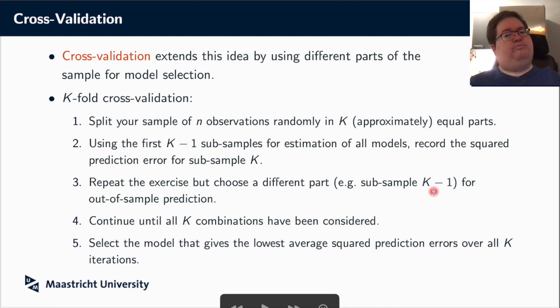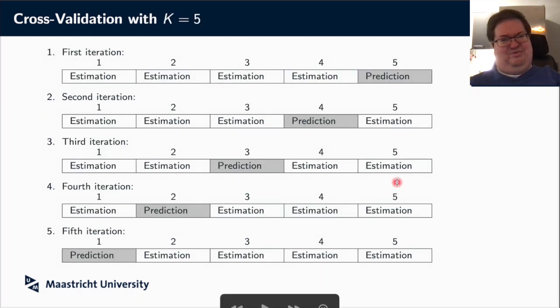And you're going to use the final part, final fold, the k-th subsample, you're going to use that to evaluate how well your model works. So you're going to do a prediction and record some sort of loss function, typically that would be a squared prediction error. And this is still the same as we had in the previous slide, so we're going to do something more. We're now going to repeat that exercise, but then choose, say, subsample k minus 1 to not estimate on, but to evaluate on. And you do that until you have all combinations. And then, of course, you average over all the k iterations that you did, and that gives you the model with the lowest prediction error.